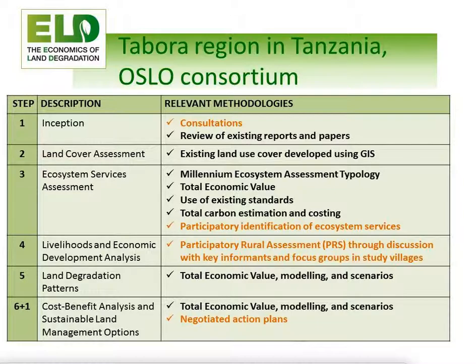The final step where participation is clearly important is when you develop community management plans or negotiated action plans that take into account all the different aspects of ecosystem services and the different viewpoints of people, so that you can get at least a consensus on what's important and what should be valued. I'm wondering if any of you have any experience of this sort of participation — or is this new for you?